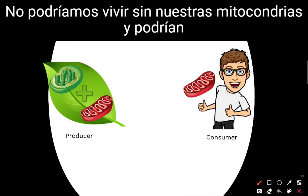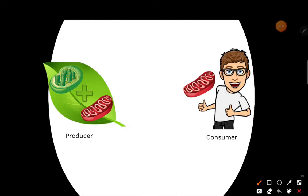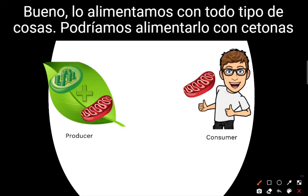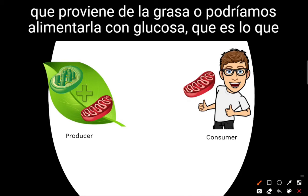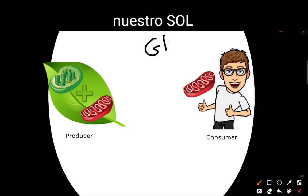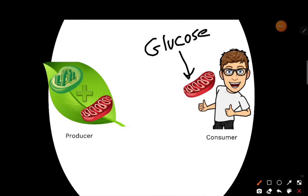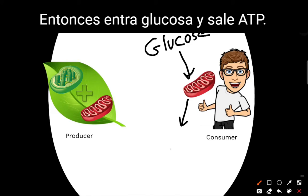We could not live without our mitochondria, and they could not live without us. So we have to feed it food. We could feed it ketones, which is from fat, or we could feed it glucose, which is what our SOL test cares about. So glucose goes in, and ATP comes out.